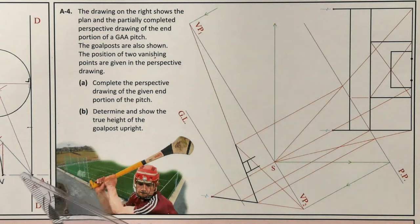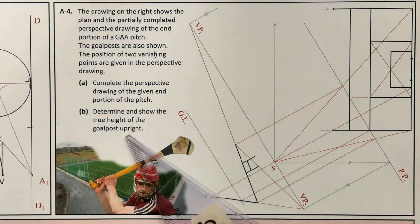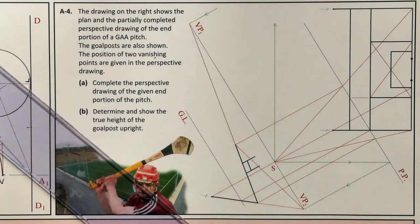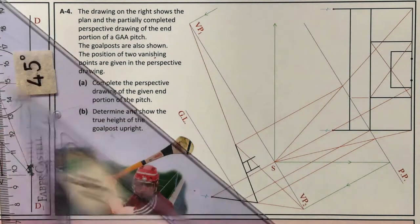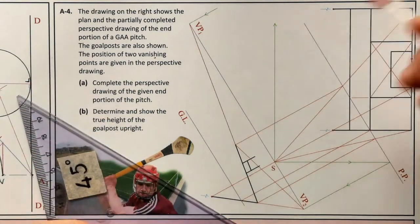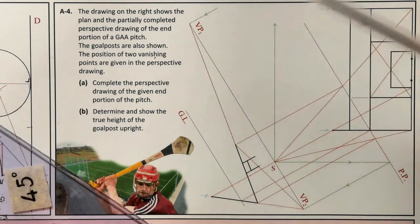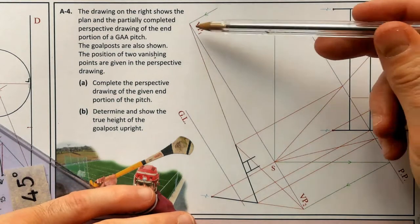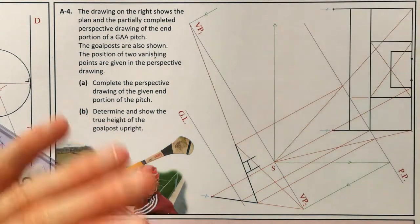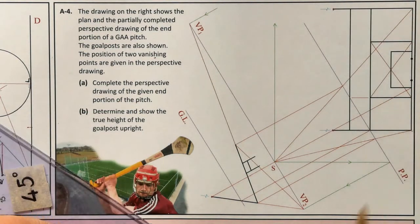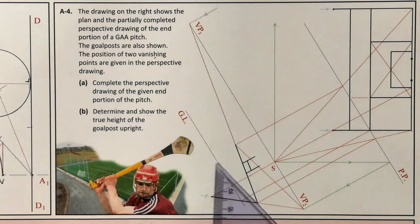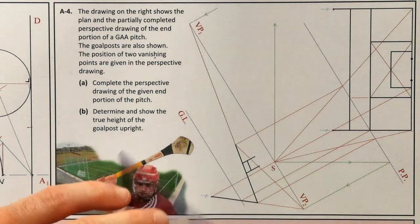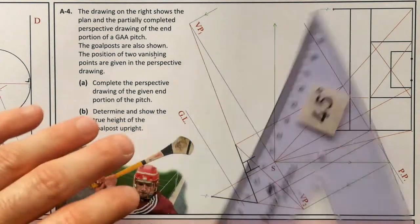They've given us the back edge as far as here, but not the finishing point on the other side. They've given us the vanishing points, the ground line, the horizon line, and our picture plane — so this isn't actually too hard. It's just a case of finding the exact position of our points.